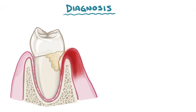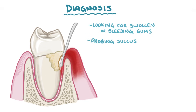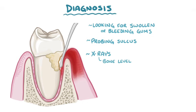Diagnosis of gingivitis and periodontitis are usually made by looking for swollen or bleeding gums, as well as probing of each gingival sulcus to determine how deep it is, and x-rays to evaluate the bone level. With inflammation and destruction, the sulcus becomes deeper as the periodontal pocket expands.